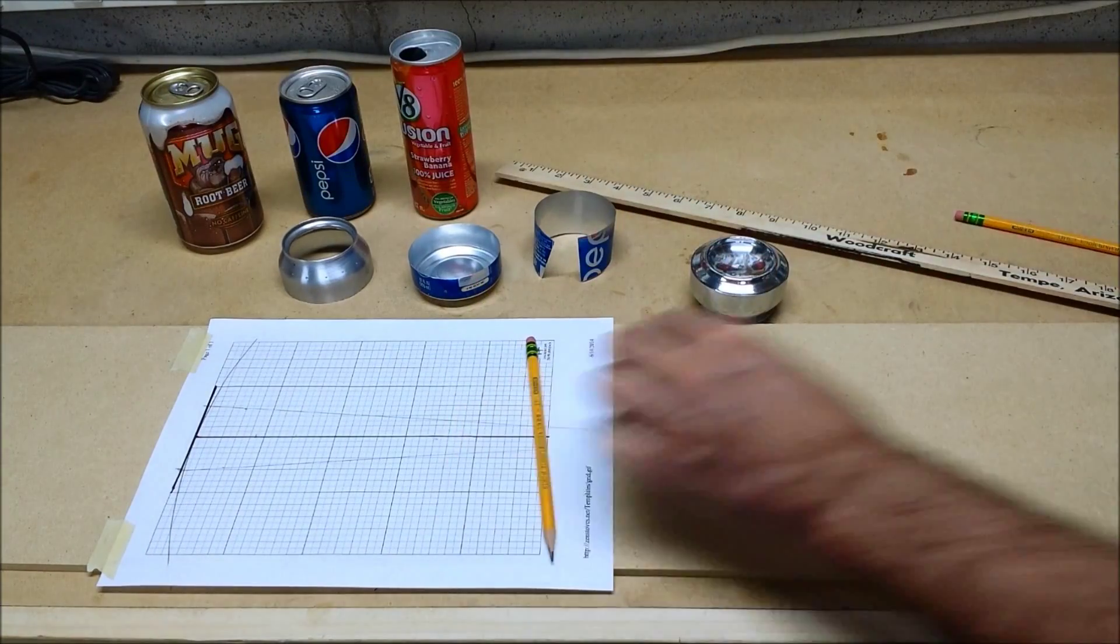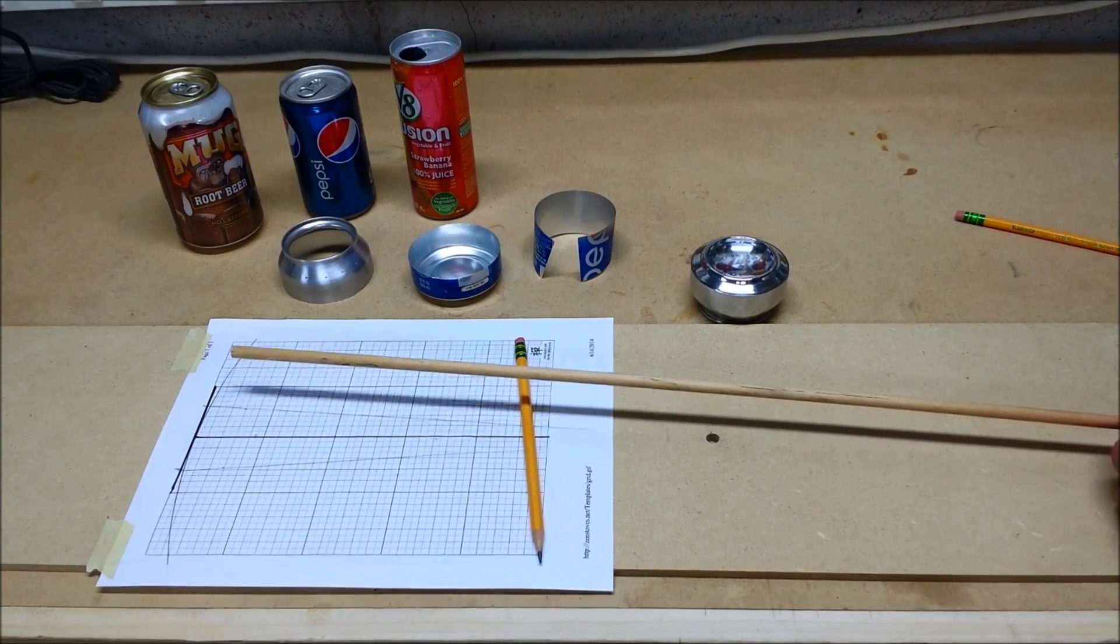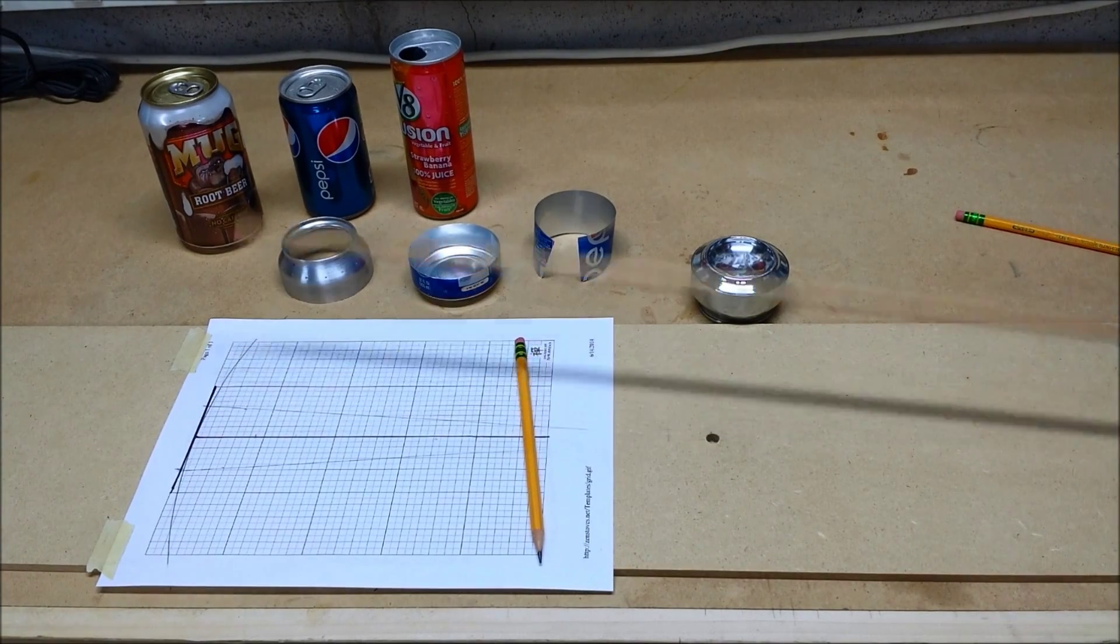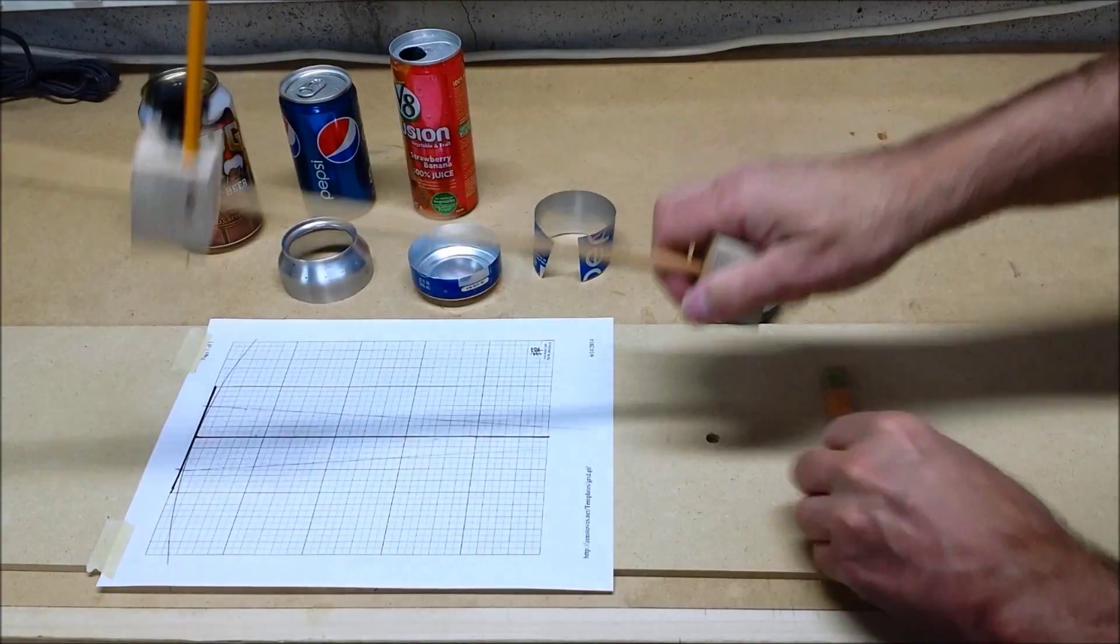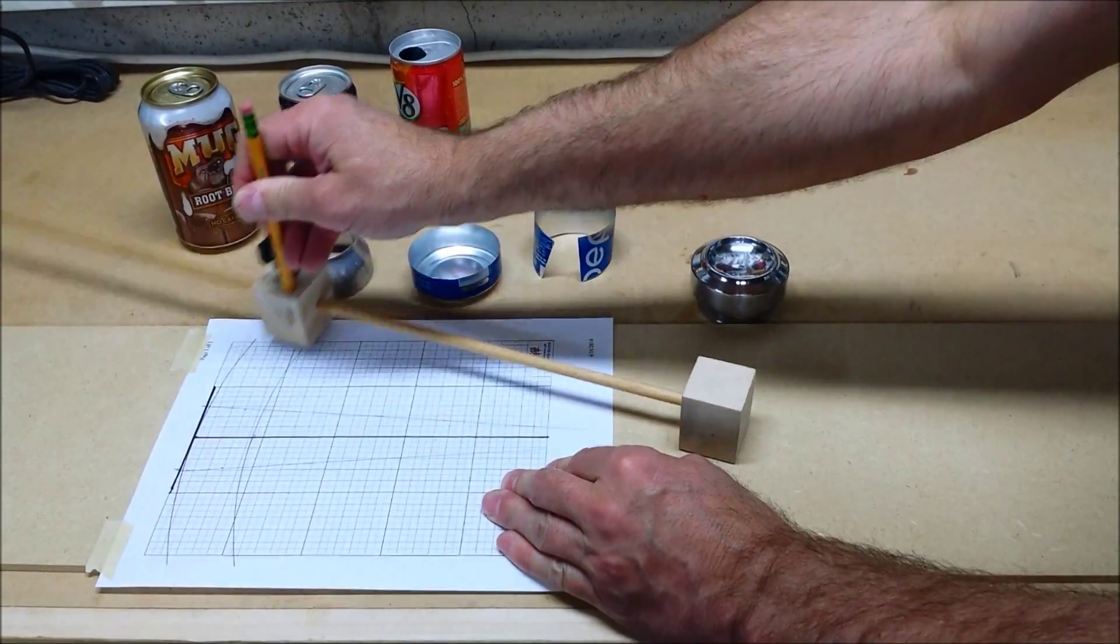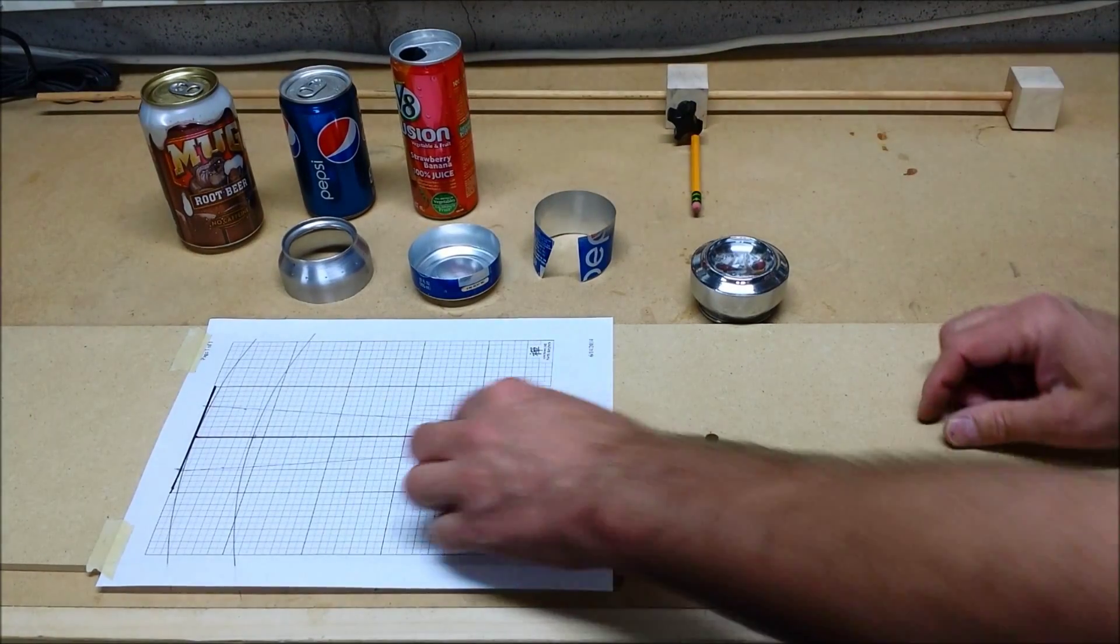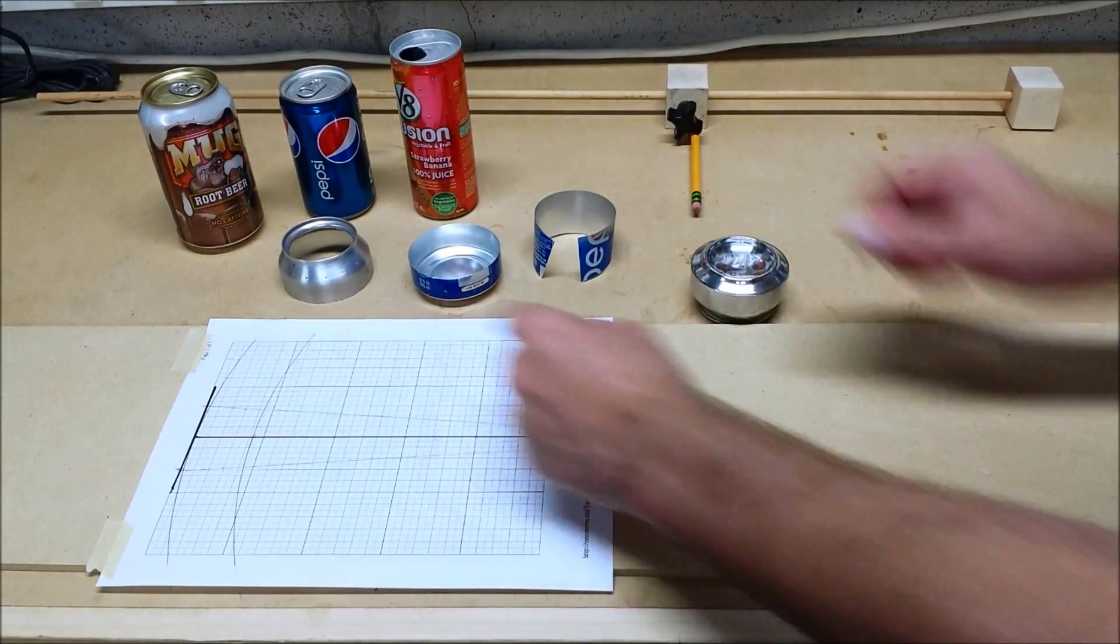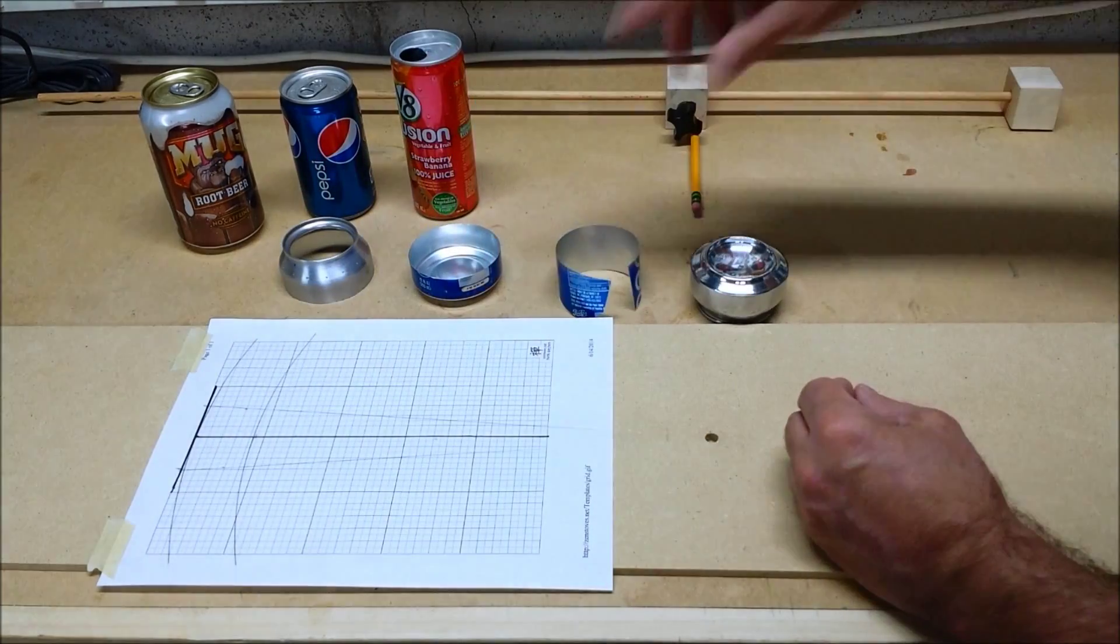Now I'm going to reset it for an inch and a half less and mark that point. And that's it. That's the two arcs that are going to make this inner wall.